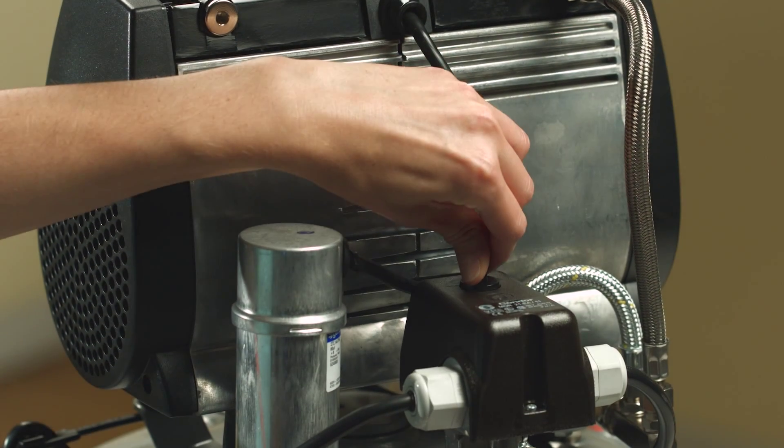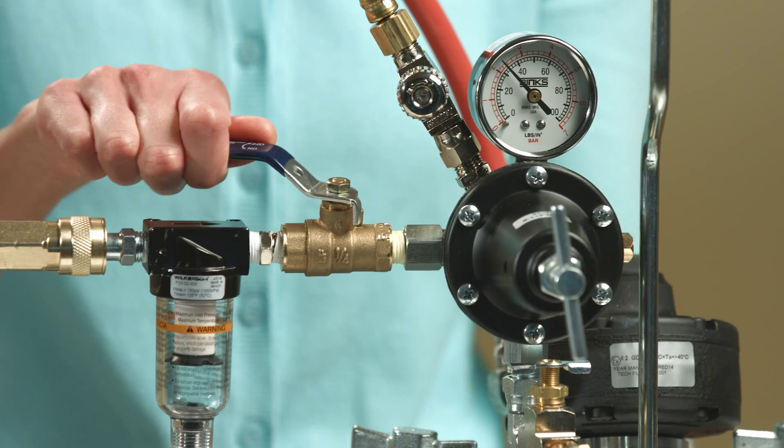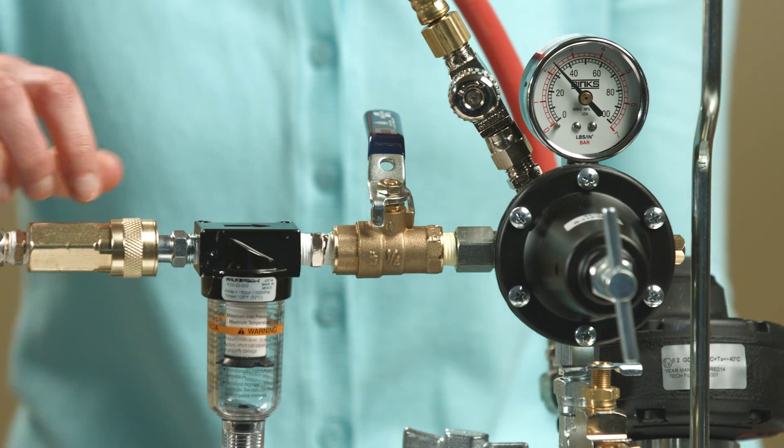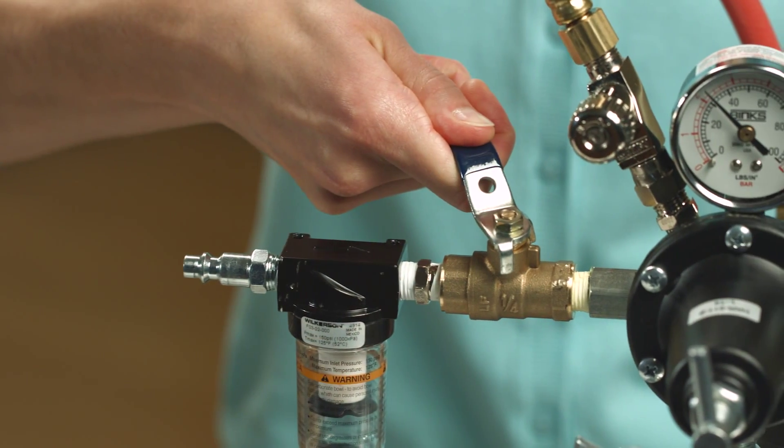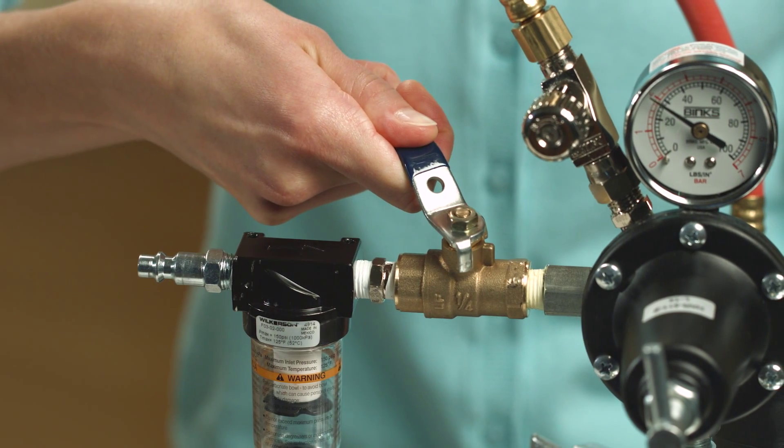When finished, turn the air compressor off. To decompress the spray tank, close the valve and then disconnect the air hose. Slowly open the valve to release the air pressure.